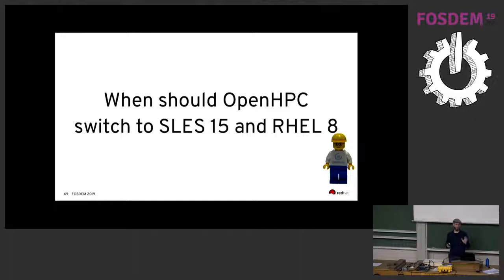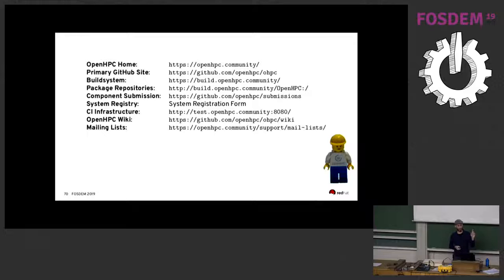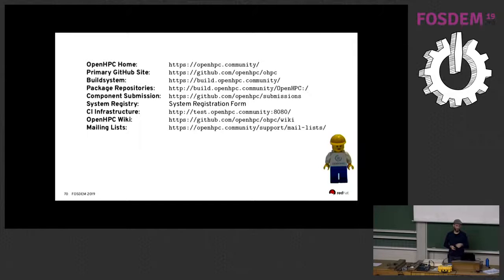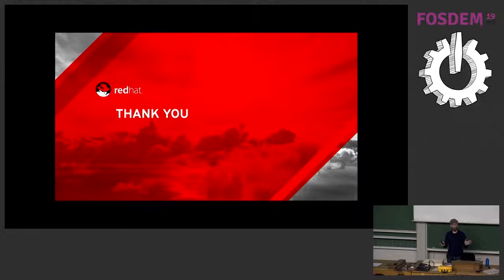The main problem is testing. We build all packages from a single source, so building isn't really the issue — but ensuring the result actually works requires testing across all combinations. We're currently discussing how to handle this correctly: when should OpenHPC switch to SLES 15 and RHEL 8, how do we deal with old releases, and how do we deal with new releases. Here are links to the project: our homepage, our CI system, our GitHub page with all the spec files, and our CI infrastructure showing the current state of packages and testing.